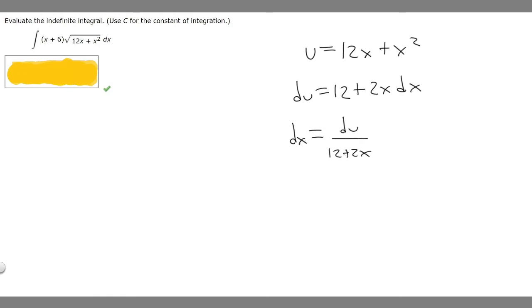Now that we got that, we want to rewrite our integral and replace everything that u is with the actual letter u. So it becomes (x + 6) times the square root of u, because this is u.